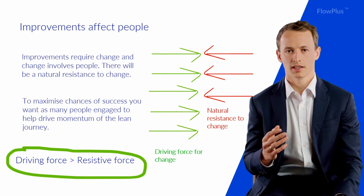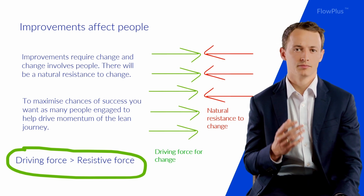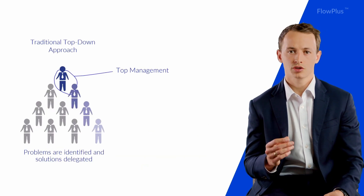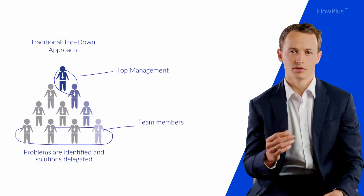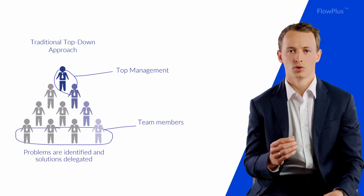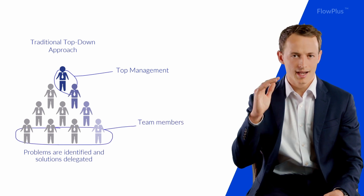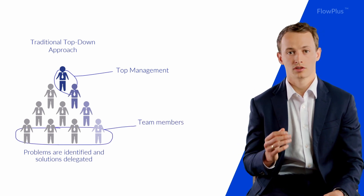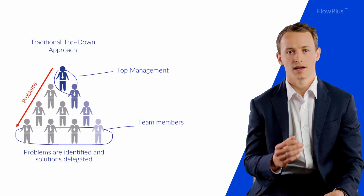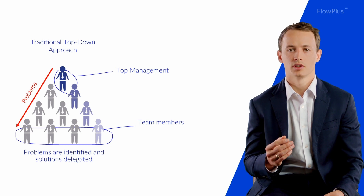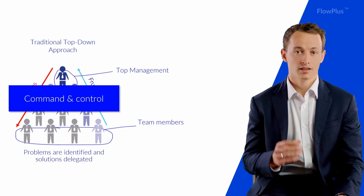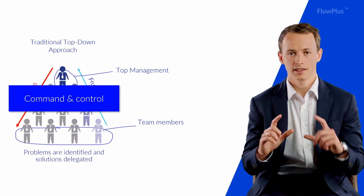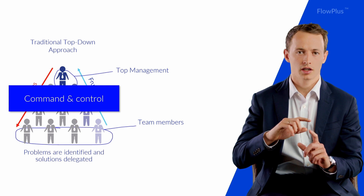The traditional approach is for managers to report problems down the triangle and push solutions down to the people doing the job. The lean way of doing this is to completely flick the triangle upside down.